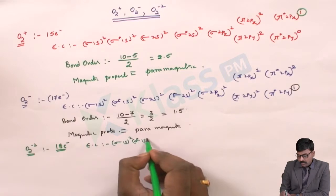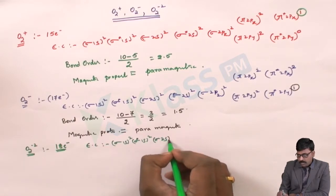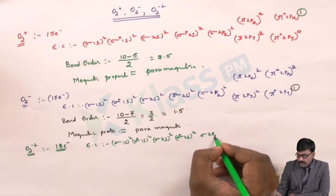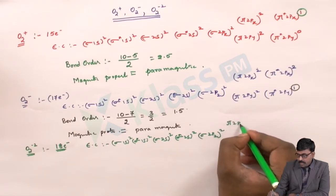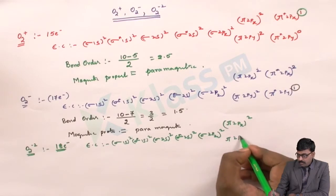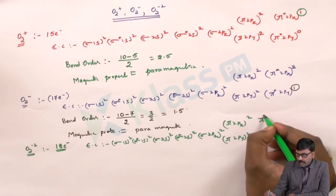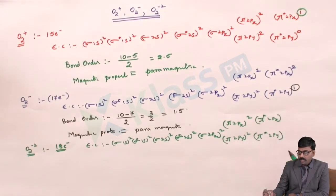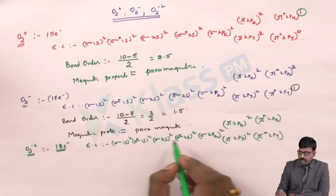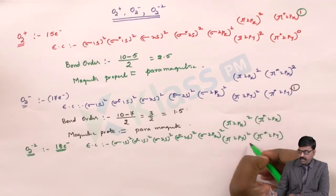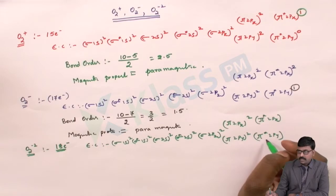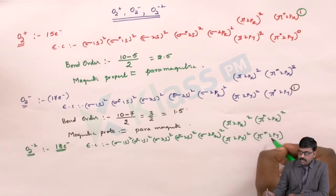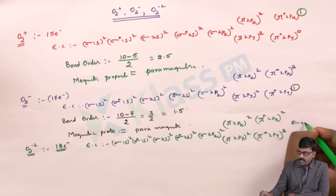The electronic configuration of O2 minus 2 is: sigma 1s2, sigma star 1s2, sigma 2s2, sigma star 2s2, sigma 2pz2, pi 2px2, pi 2py2 — giving 14 electrons filled. Four more electrons need to be filled, which go into pi star 2px2 and pi star 2py2, with sigma star 2pz0 remaining empty.